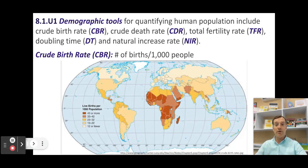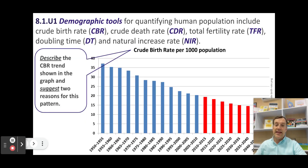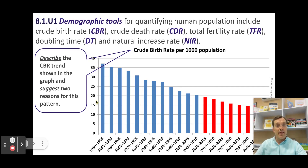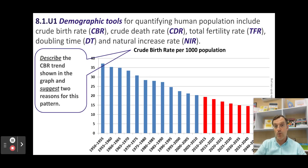The crude birth rate is simply the number of births per thousand people — not per thousand women, per thousand people. On this graph, you can see a very clear trend. Starting in the 1950s, there were approximately 35 to 37 births per thousand people. By the time we get to the current era, that level is closer to 17 births per thousand people. This is a falling crude birth rate, and we can infer several things about society from that information.